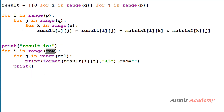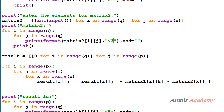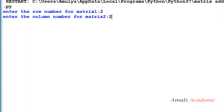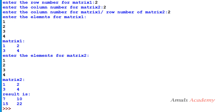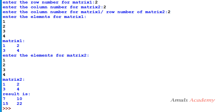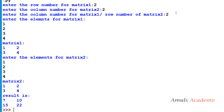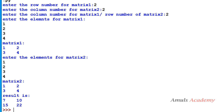To print the result, we loop over p rows and q columns and print result[i][j] with formatted spacing. Running the program with inputs 2, 2, 2 and the same matrices as example 1, we get 7, 10, 15, 22 — which matches our manual calculation. You can try different values as well.